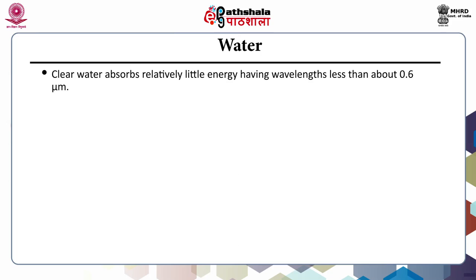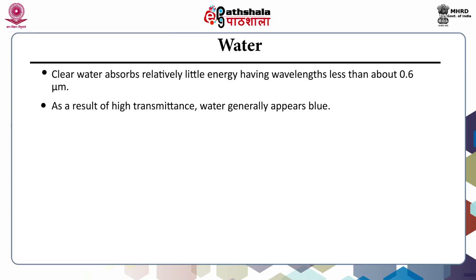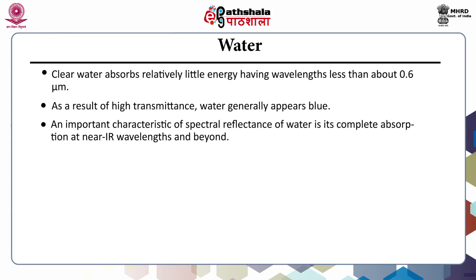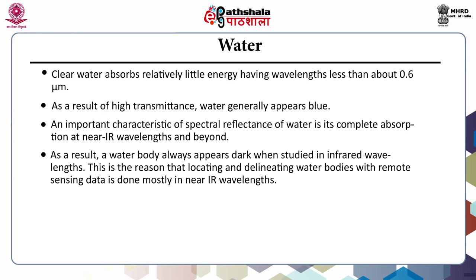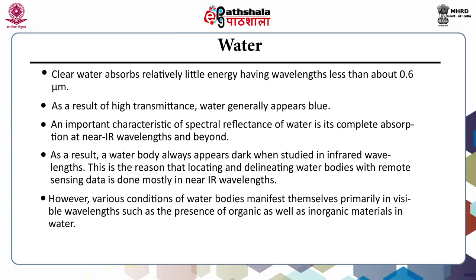Now comes water. Clear water absorbs relatively little energy having wavelengths less than about 0.6 micrometer. As a result of high transmittance, water generally appears blue. An important characteristic of the spectral reflectance of water is its complete absorption of near-infrared wavelengths and beyond. As a result, a water body always appears dark when studied in infrared wavelengths. This is the reason that locating and delineating water bodies with remote sensing data is done mostly in near-infrared wavelengths. However, various conditions of water bodies manifest themselves primarily in visible wavelengths, such as the presence of organic as well as inorganic materials in water.